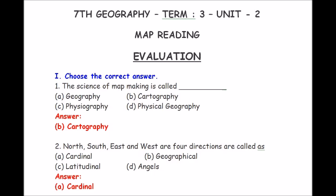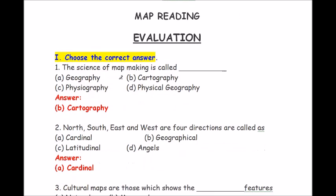Roman number 1, choose the correct answer. Question number 1: the science of map making is called dash. Options are geography, cartography, physiography, physical geography. The answer is cartography. The science of map making is called cartography.